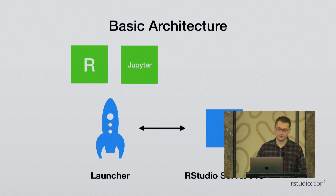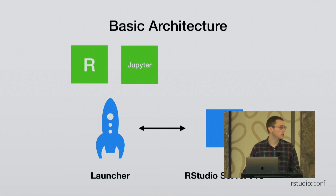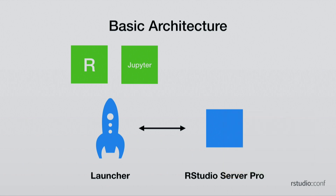Just a quick overview of the architecture so you can understand how this all works. RStudio Server Pro now talks to the launcher, which allows you to launch R sessions and Python Jupyter sessions — potentially in the cloud via Kubernetes or Slurm, or locally on the server. The key takeaway is that Jupyter sessions require the launcher, which is a new feature in version 1.2, and R and Jupyter sessions are treated as peers of each other.